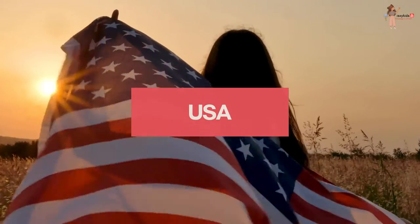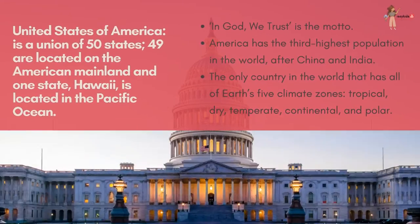The United States of America is a union of 50 states. 49 are located on the American mainland, and one state — Hawaii — is located in the Pacific Ocean. 'In God we trust' is the motto. America has the third highest population in the world, after China and India. The only country in the world that has all of Earth's five climate zones is America: tropical, dry and temperate, continental, and polar.